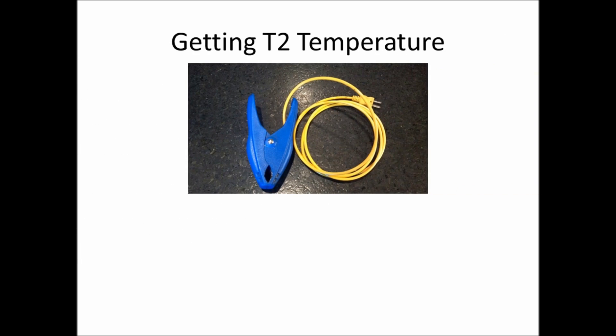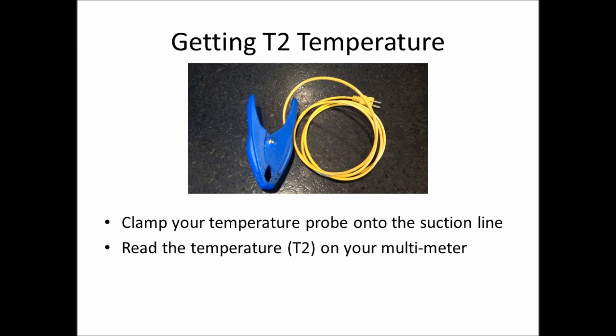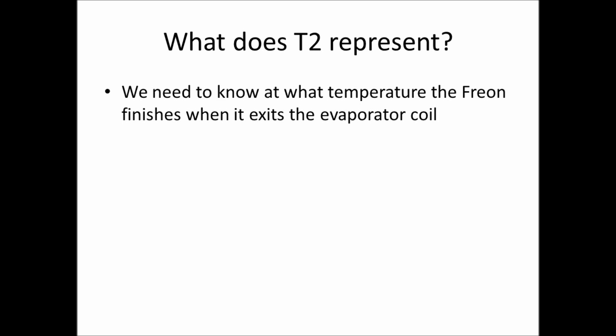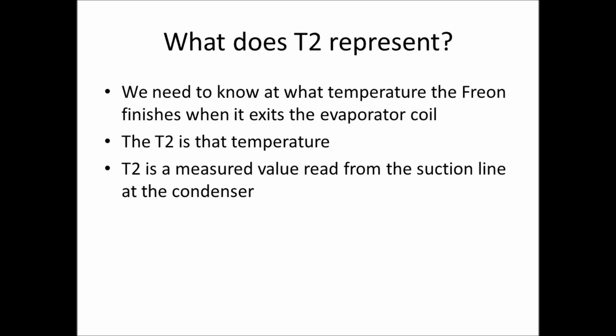Getting T2 requires a temperature probe attached to the suction line. The temperature probe reads directly to your multimeter and gives you the temperature of the gas freon as it leaves the evaporator coil. In our example we're going to use 54 degrees. T2 is the temperature of the freon when it finishes and exits the evaporator coil.